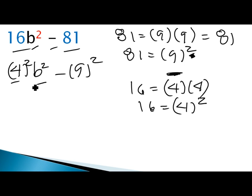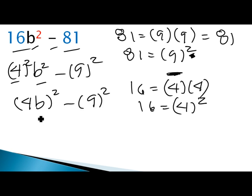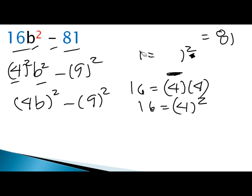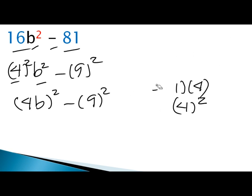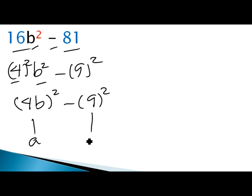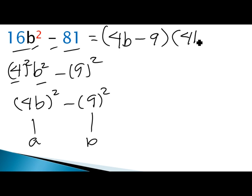We now substitute: 16 becomes 4² and 81 becomes 9². With different bases but the same exponent, we combine 4² b² into (4b)² and keep 9². Here a is 4b and b is 9. Applying the formula, the final answer is (4b minus 9)(4b plus 9).